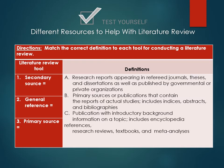Each of these has its own definition. It's important to understand what a secondary source is — it's a publication with introductory background information on your topic. A general reference is a primary source or publication that contains the reports of actual studies, with abstracts, bibliographies, and so on. And your primary source, which is the gold mine, is the research reports appearing in actual refereed journals.